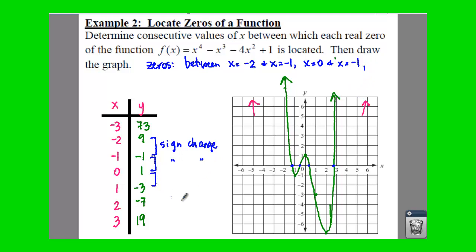We're also going to say we have a sign change between zero and one. Between x equals zero and x equals one. So x equals zero and x equals a positive one. And then our third sign change, not between one and two, but between two and three. Between x equals two and x equals three.